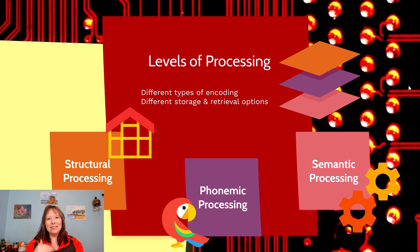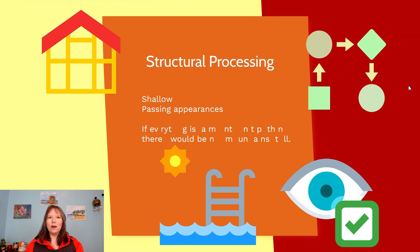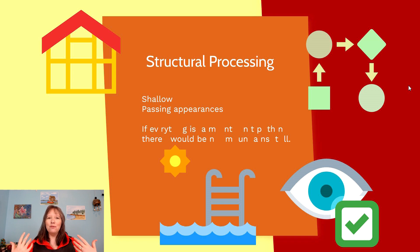There are more shallow layers and deeper layers. Both structural and phonemic processing are considered relatively shallow, whereas semantic processing is considered deep. Structural processing is the idea that you are not putting a lot of effort into what you're attending to — you might not even be that attentive. At the very surface level, this is really shallow processing. You're more passive, not deeply engaged, just going with the flow without putting in lots of effort.